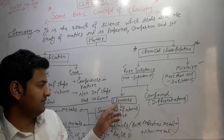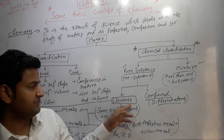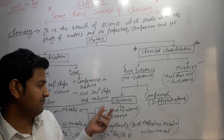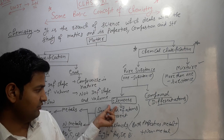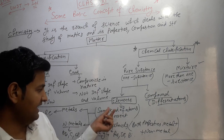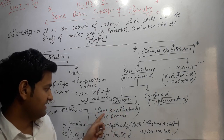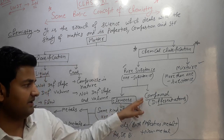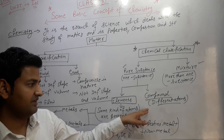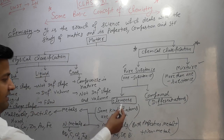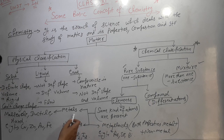Pure substances are again classified into two types: elements and compounds. Elements — the basic unit of an element is the atom. The same kind of atoms are present in an element. If different atoms are present, they form a compound. Elements can be further classified into three types: metals, non-metals and metalloids.